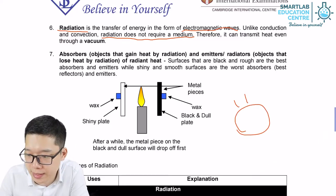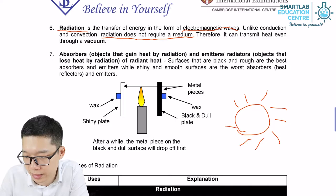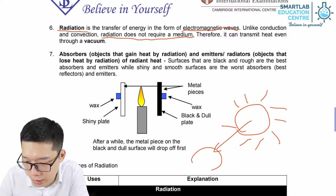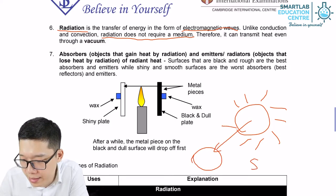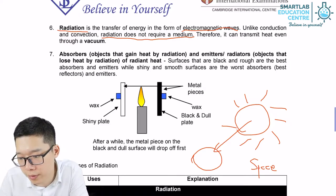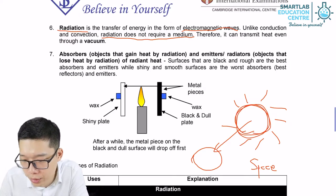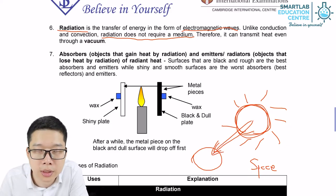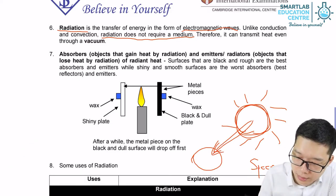For example, our sun. It gives out heat to the earth and the space is vacuumed. So the only way for the sun's heat to reach earth is through radiation.